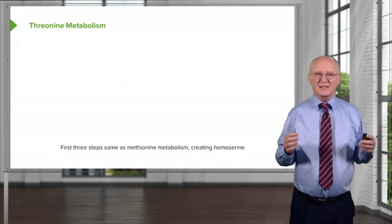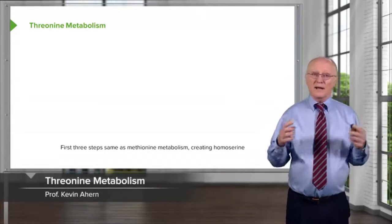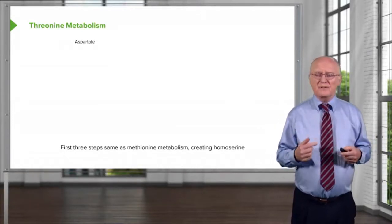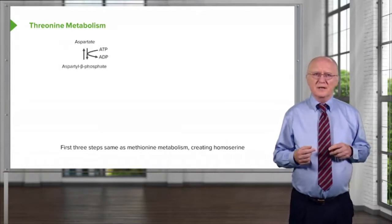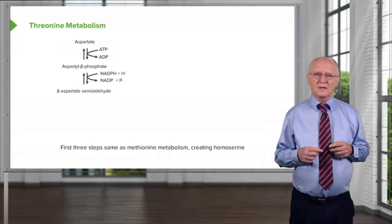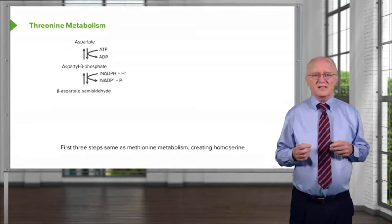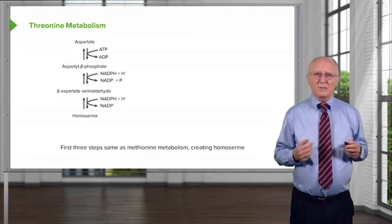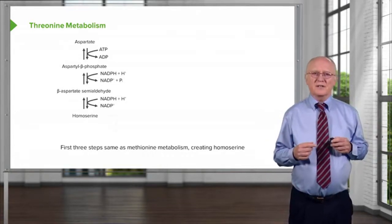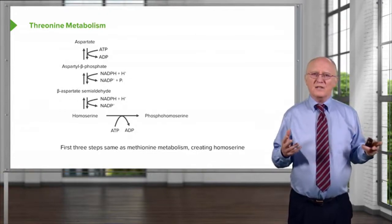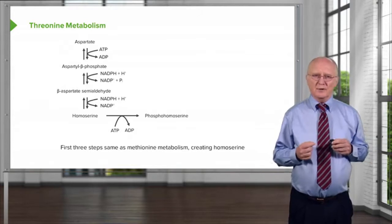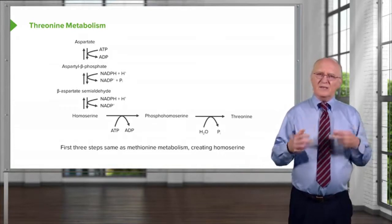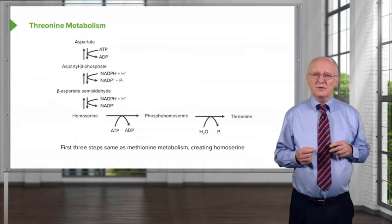The next amino acid metabolism we will consider is threonine. Threonine's metabolism overlaps a bit with methionine metabolism. The first three steps of threonine synthesis from aspartate are the same as in methionine synthesis: aspartate is converted to aspartyl-beta-phosphate by phosphorylation; aspartyl-beta-phosphate is converted to beta-aspartate semialdehyde by reduction; and homoserine is created from that intermediate by another reduction. Homoserine is then phosphorylated to phosphohomoserine using ATP, and phosphohomoserine is dephosphorylated via a molecular rearrangement to produce threonine.